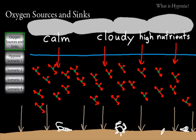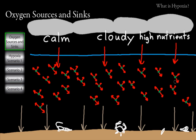To summarize oxygen sources and sinks: the main sources in an aquatic system are diffusion from the atmosphere, and photosynthesis by algae and plants in the water — also called phytoplankton. Algae suspended in the water are called phytoplankton. The main sink of oxygen is the sediments, though there are other sources of oxygen consumption as well. The sediments are the most important one to consider.